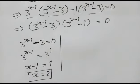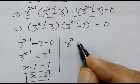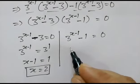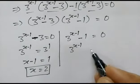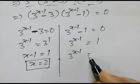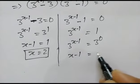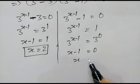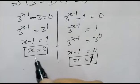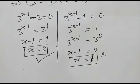Case two: 3^(x-1) minus 1 equals 0, so 3^(x-1) equals 1, or 3^(x-1) equals 3^0, giving x minus 1 equals 0, so x equals 1. Checking both solutions, x equals 1 will satisfy the equation but x equals 2 — sorry — x equals 1 satisfies the equation and x equals 2 does not satisfy the equation. Thank you friends.